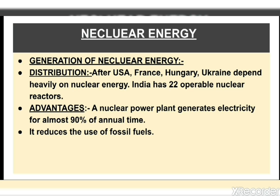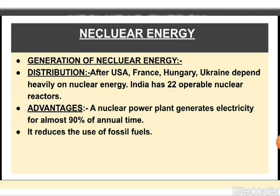A nuclear power plant generates electricity for almost 90 percent of its annual time. Nuclear power is obtained from energy stored in the nuclei of atoms of naturally occurring radioactive elements like uranium, thorium and plutonium.